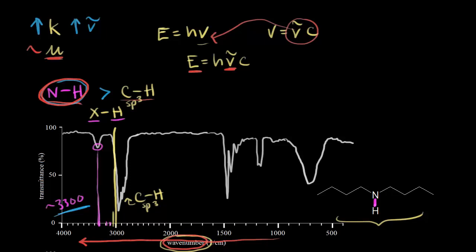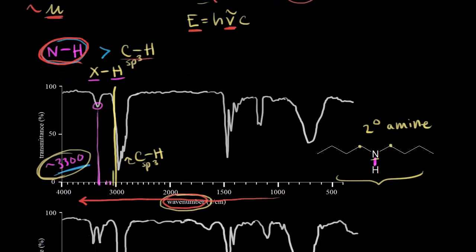Looking at a typical IR spectrum for a secondary amine — where this nitrogen is bonded to two carbons — you're going to get one signal approximately at 3,300. Let's compare this IR spectrum of a secondary amine with another amine.